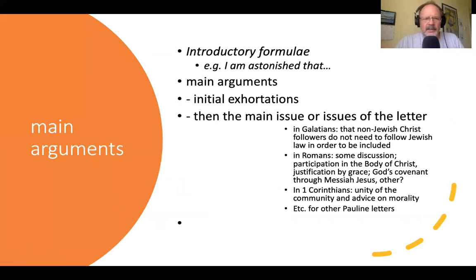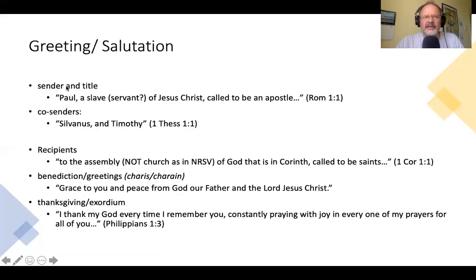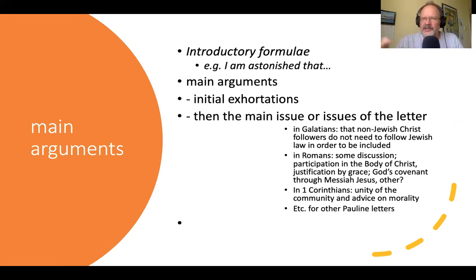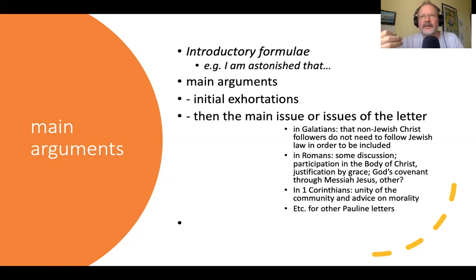So at the beginning of a Pauline letter you have: greeting, salutation, sender, co-senders, recipients, benedictions, and thanksgiving. Then you move on to the main argument, which is wildly different across all of Paul's letters because each deals with something very different. Paul does tend to use the same sort of language throughout — an introductory formula, main arguments, exhortations, and then the main issue or issues of the letter. In Galatians, his main point is that he does not want non-Jewish Christ followers to follow the Torah. In Romans, the discussion is about justification and God's covenant through the Messiah. In First Corinthians, Paul's argument centers on the unity of the community and ethical matters within it.